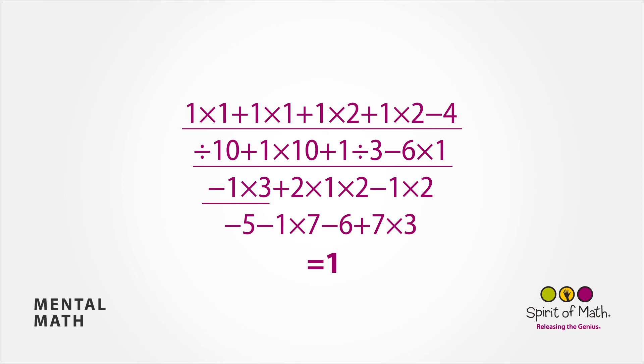0 times 3 is still 0, plus 2 is 2, times 1 is 2, times 2 is 4. 4 minus 1 is 3, times 2 is 6. 6 minus 5 minus 1 is 0.